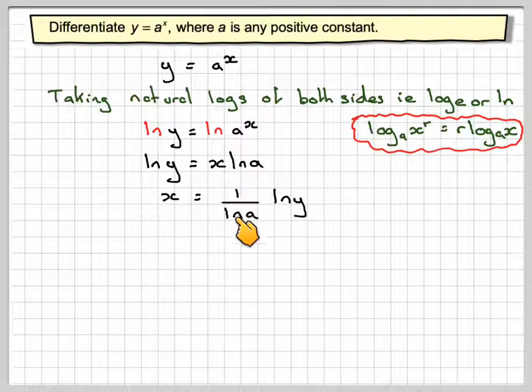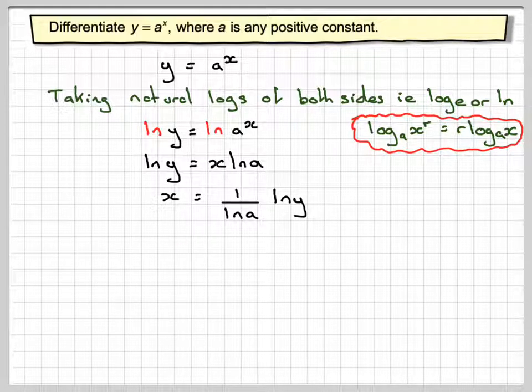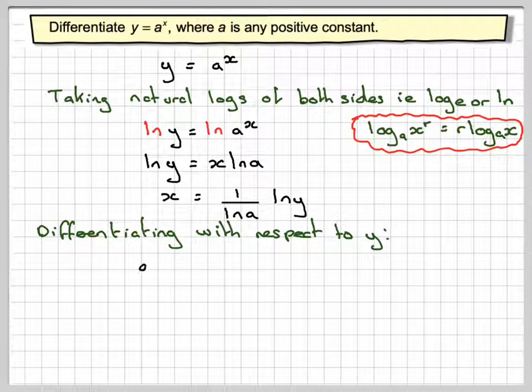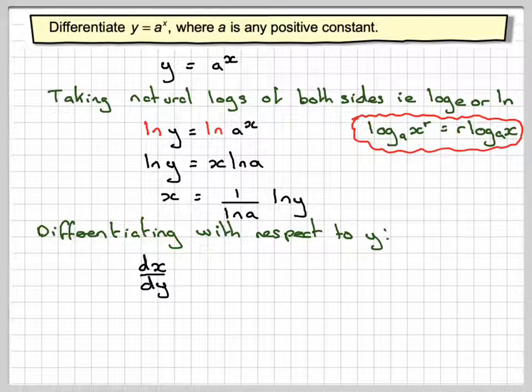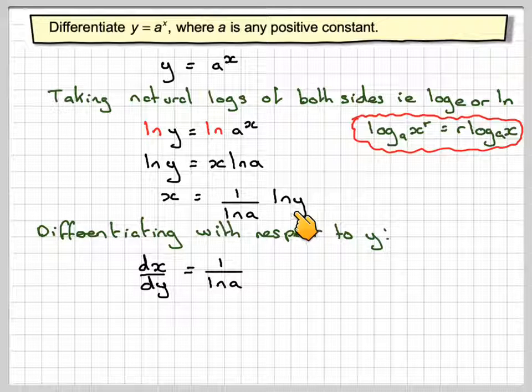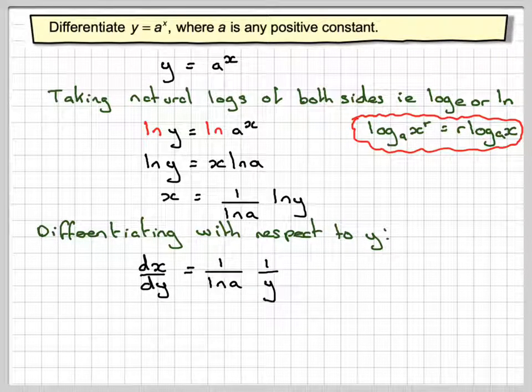Right, now 1 over ln of a is just a number, so we now differentiate with respect to y. So here we will now have dx dy. That's going to be equal to the constant, which is 1 over ln of a, times the differential of ln of y. And we just worked out the differential of ln of y is 1 over y.